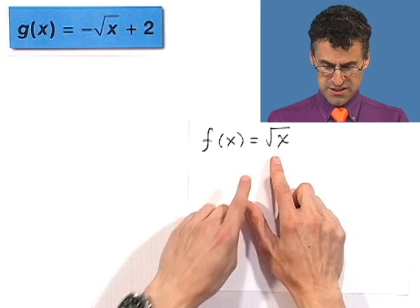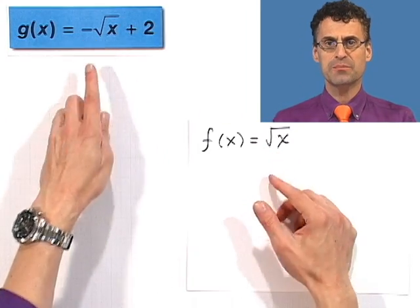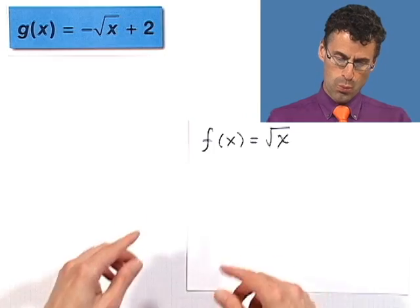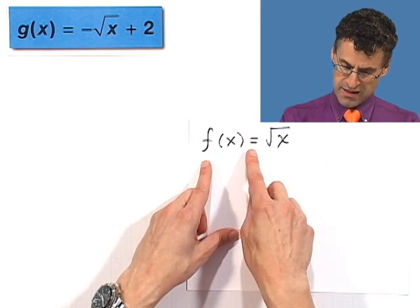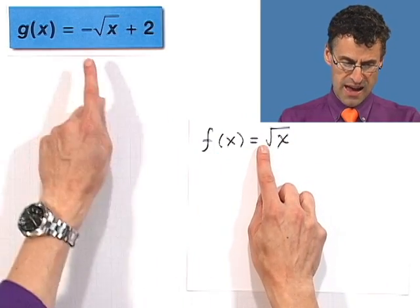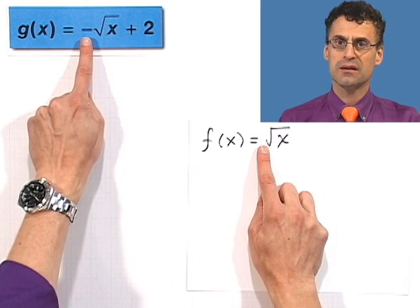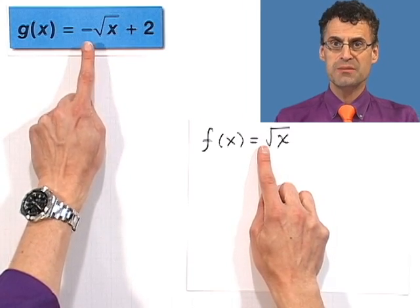And then notice that to go from here to the minus, what I'm doing is I'm taking every single y value, f(x) is y, every single y value, and I'm changing the sign. And what does that do? It means that if I had a point that was way up here, and here's the axis, it's now going to be down here. And do you see how that's going to start to actually produce a reflection around the x-axis? That's what happens when you put a negative sign in front of a function.